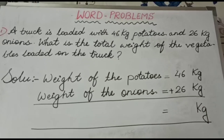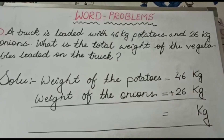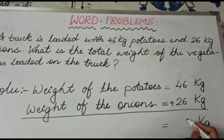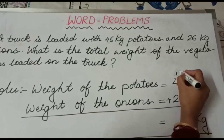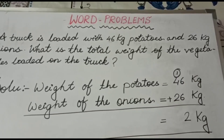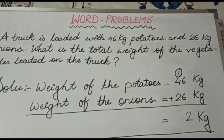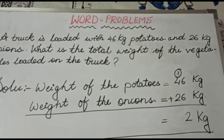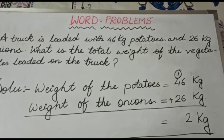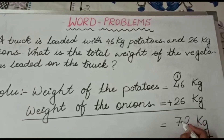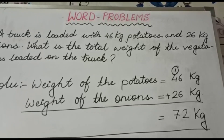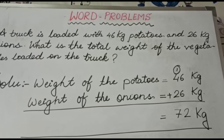First we will add 6 plus 6. 6 plus 6 gives us 12, so we will write 2 and 1 is carry. 2 plus 4 is 6, and 6 plus 1 is 7. So we will write 7 here. We have got the total weight of the vegetables.